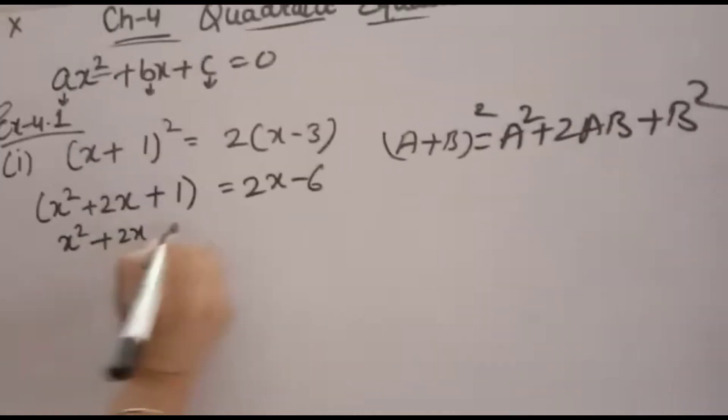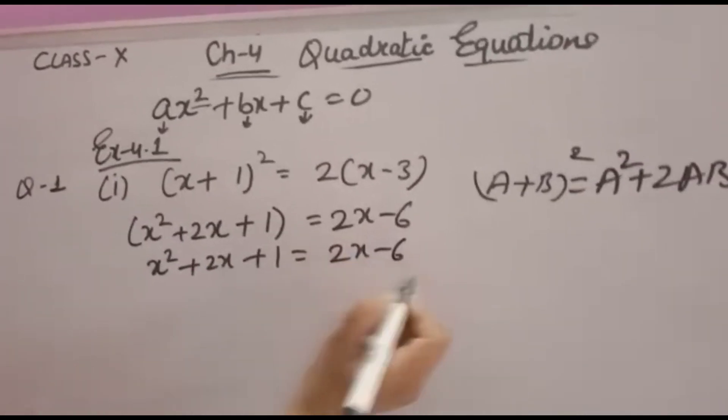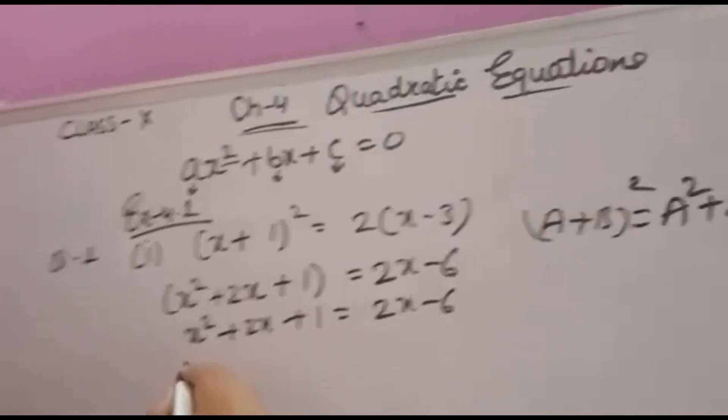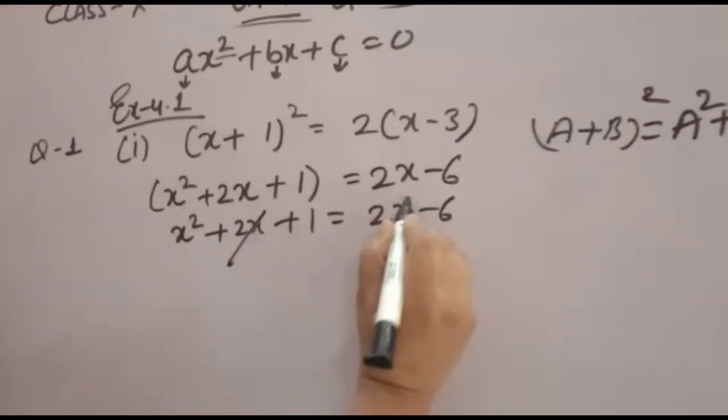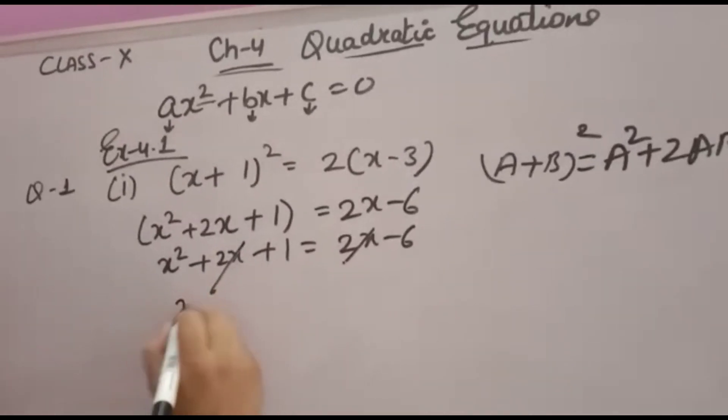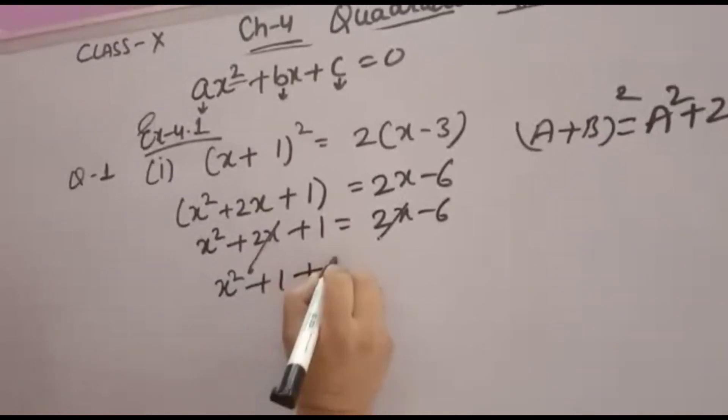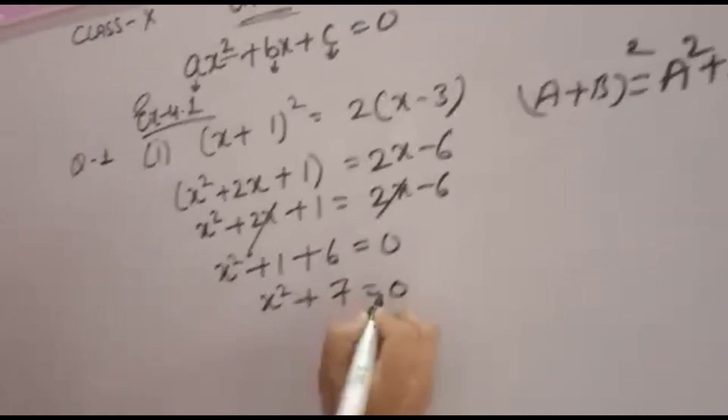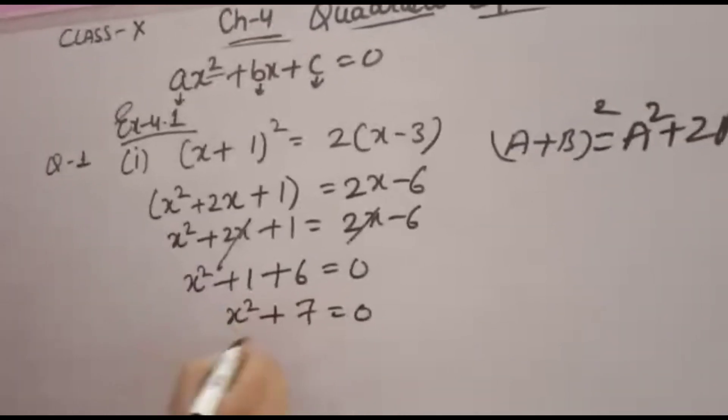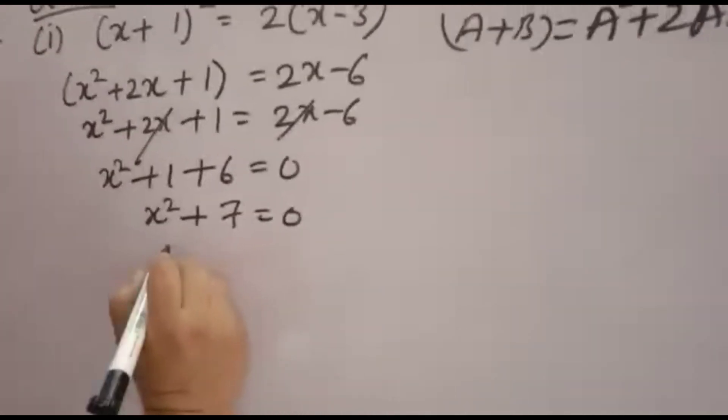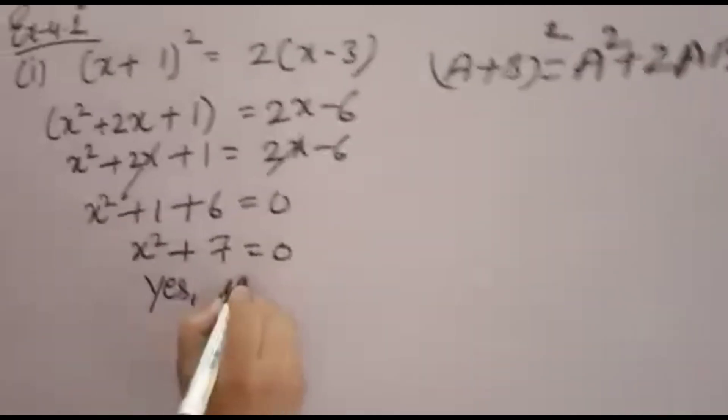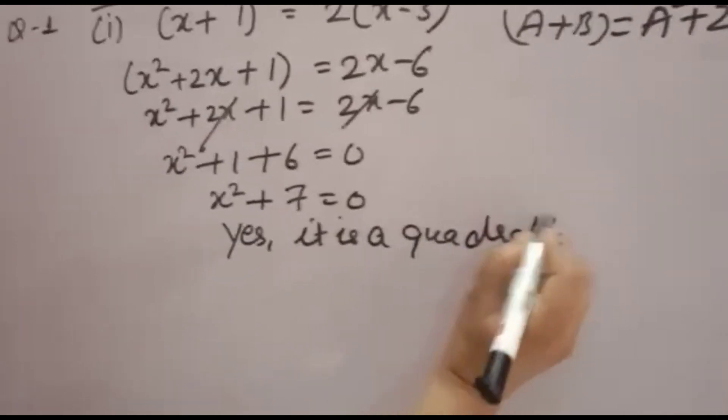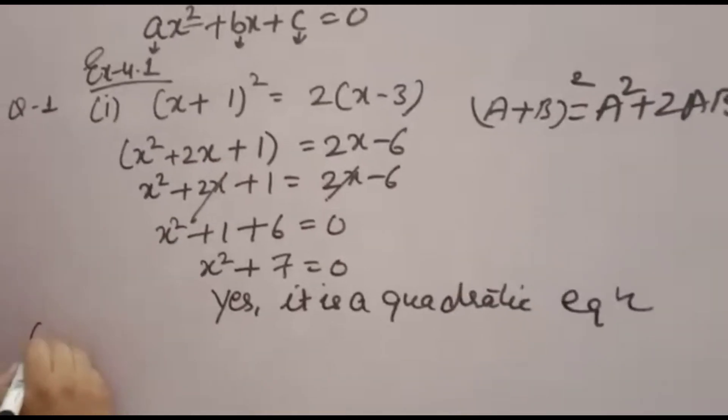So x² plus 2x plus 1 is equal to 2x minus 6. Now you have to solve it further. For solving it further, 2x minus 2x is 0, so you can cancel it. You will get x² plus 1. Minus 6 you will take this side, it will become plus 6 equal to 0. x² plus 7 equal to 0. Now, highest power of x is 2. Therefore, yes, it is a Quadratic Equation. This will be the answer.